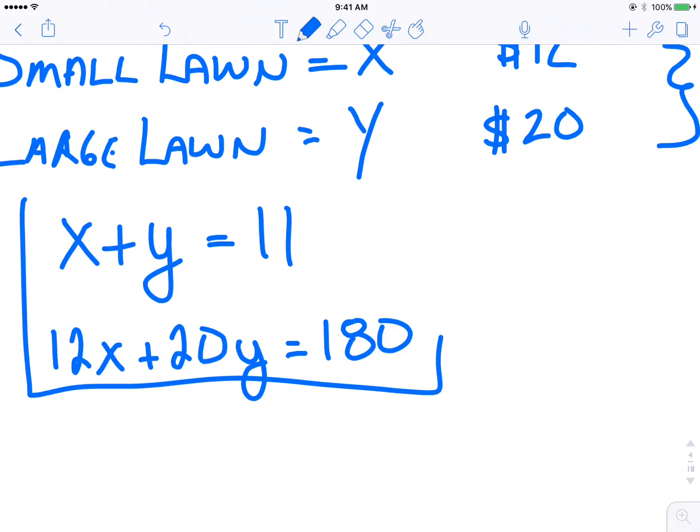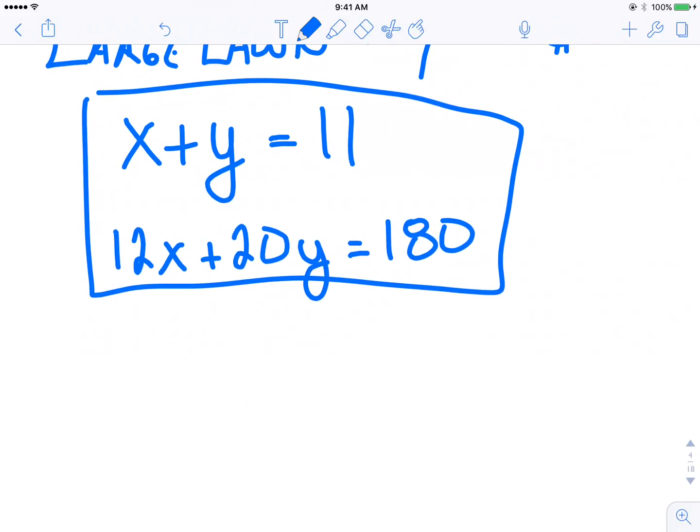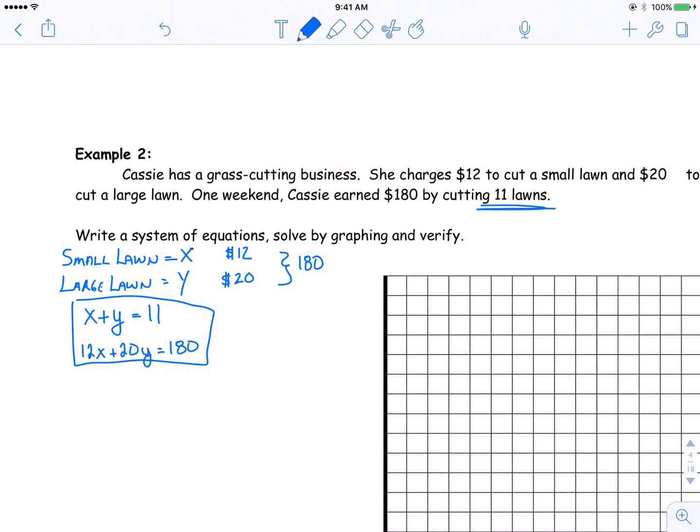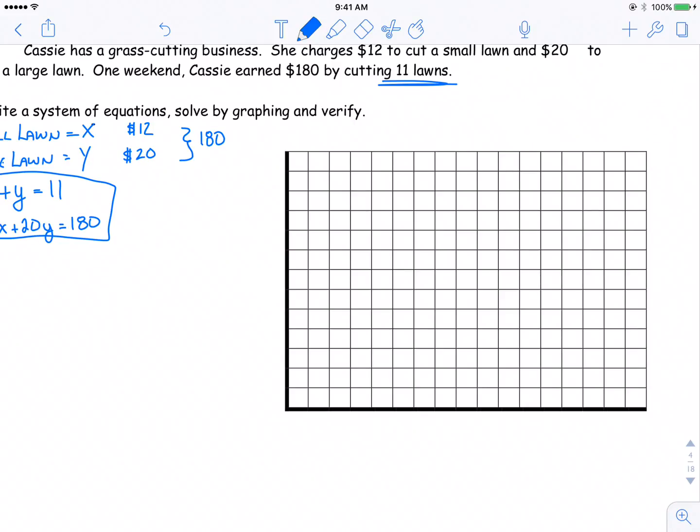Now we have our system of equations. We can graph them on the same grid and find where they crisscross. Let's graph X plus Y equals 11. I'll use X and Y intercept method, but I have to be careful because with this question there are no such things as negative values. I can't have a negative number of small lawns or big lawns, so I'm only using this first quadrant where both X and Y values are positive.